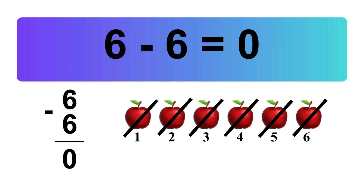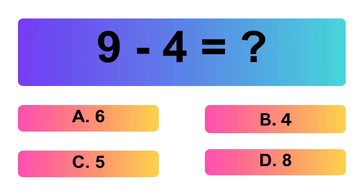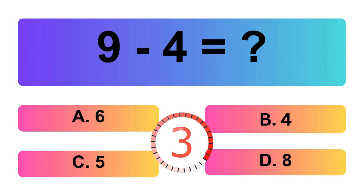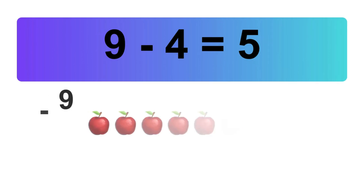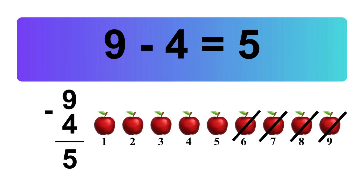Let's count it: 0. So, the answer is 6 minus 6 is 0. 9 minus 4 is equal what? Let's count it: 1, 2, 3, 4, 5. So, the answer is 9 minus 4 is 5.